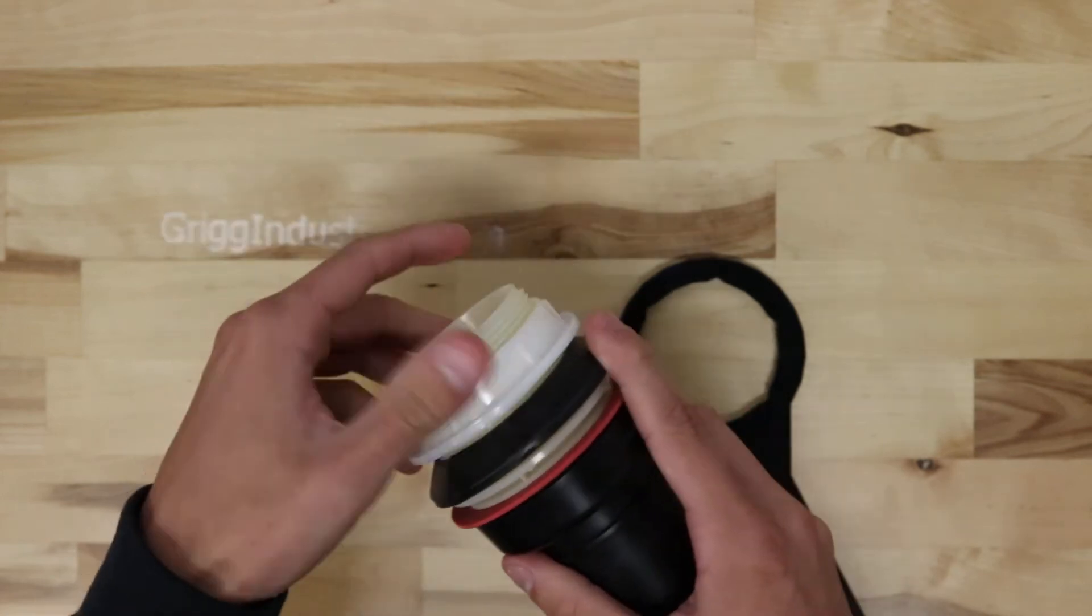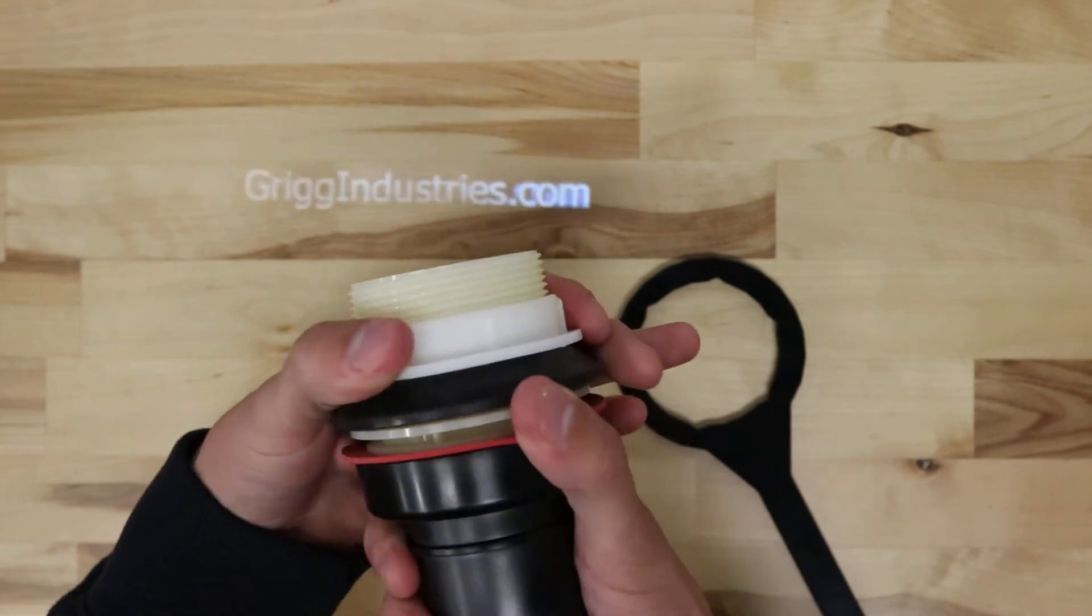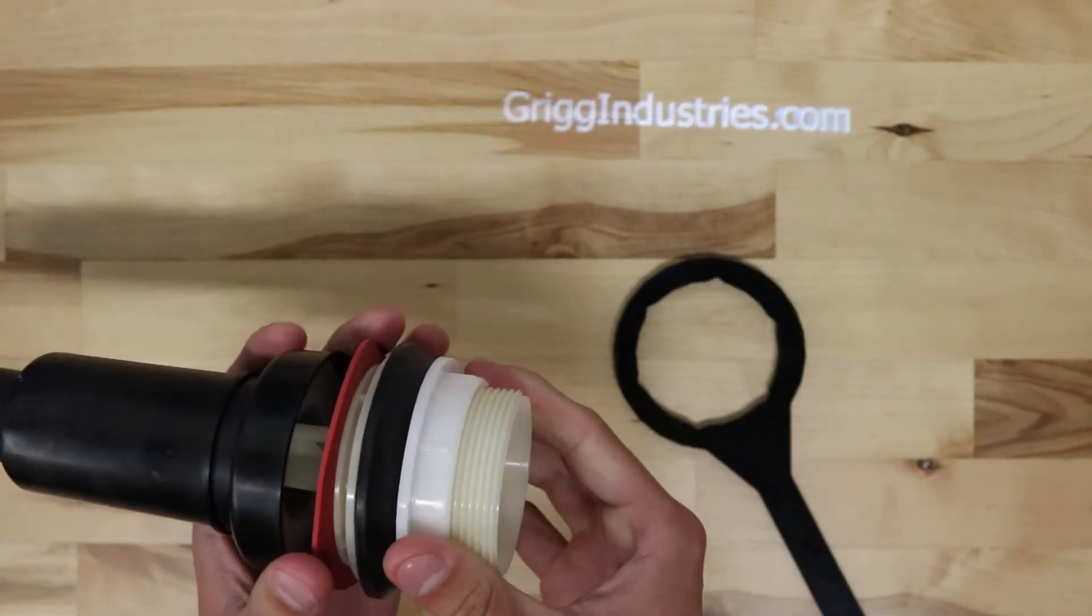This is a Mansfield 211-1112 flush valve. Get the nut tightened down on there.